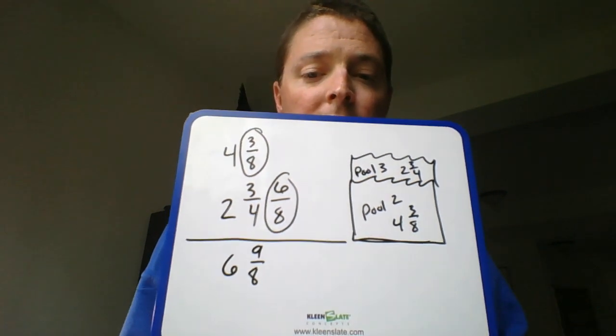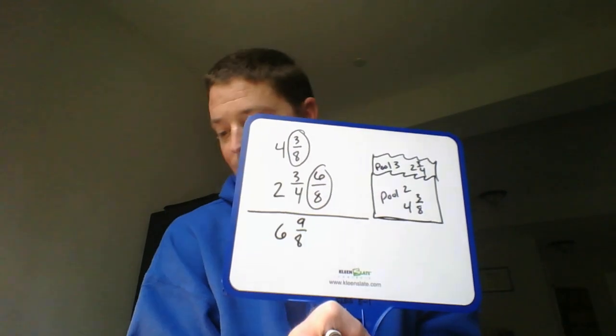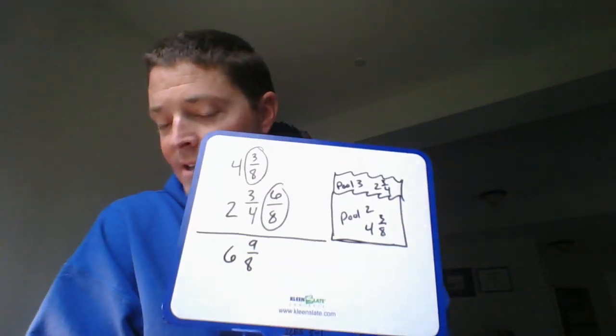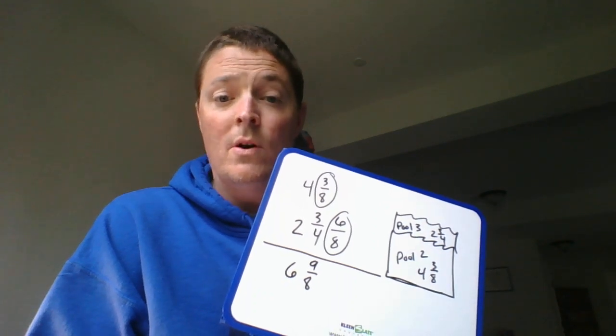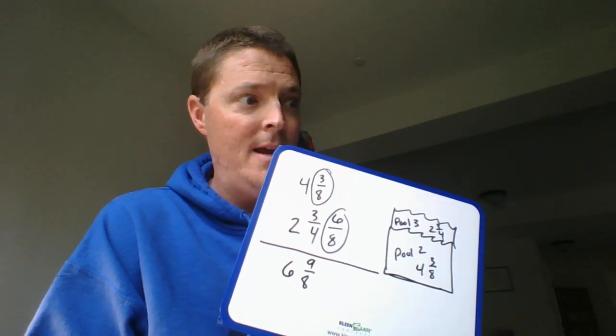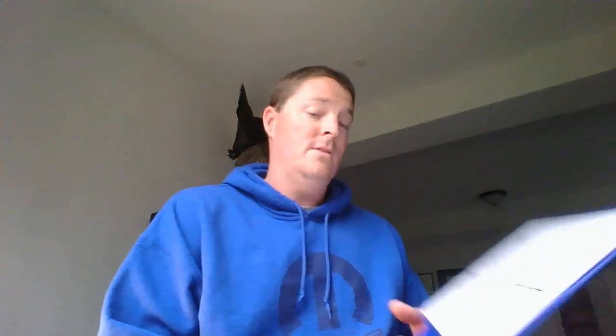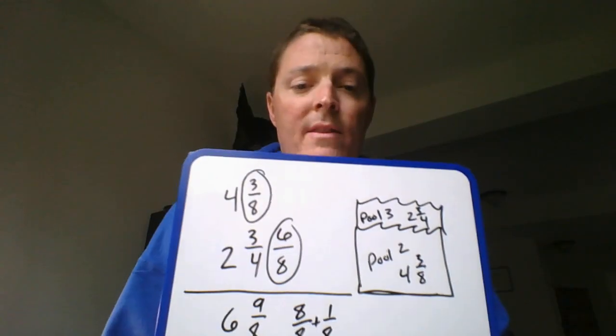Now, I had a lot of you guys turn that in as an answer, six and nine-eighths. And in fact, I sent an email to Manny Holm about that. And I said, hey Manny, is there any way that you can change that so that we don't have an improper fraction? And he said, yeah, Mr. Cox, I can do that. So this is what he did.